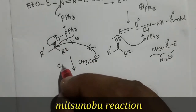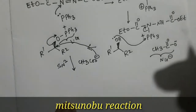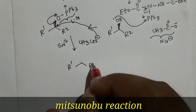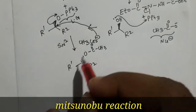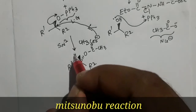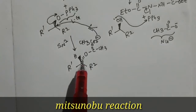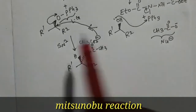The reaction pathway is SN2. So acetate will go below the plane and the leaving group will leave above the plane, meaning acetate will appear below the plane in the product. The substituents R1 and R2, C=O, CH3, and hydrogen will be above the plane. This is the reaction product of the Mitsunobu reaction. The configuration will be changed — nucleophile goes below the plane and the leaving group leaves above the plane.